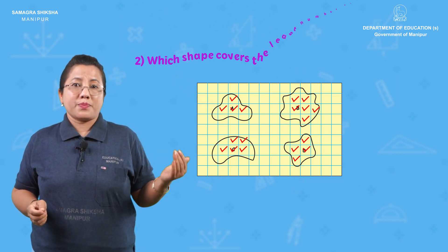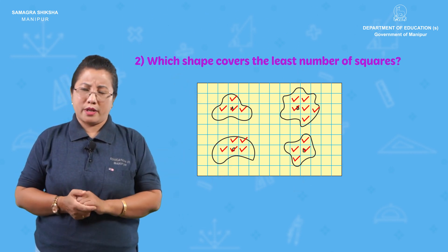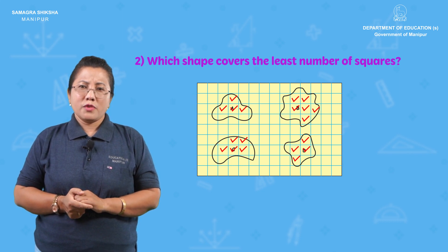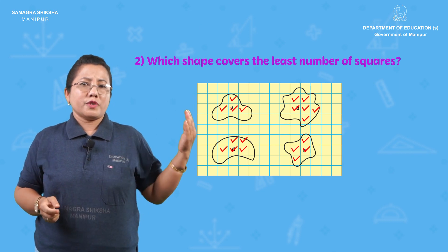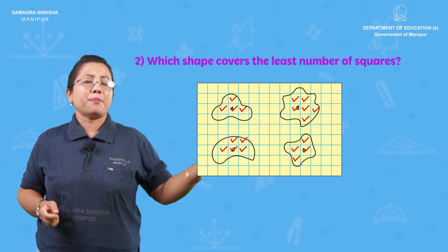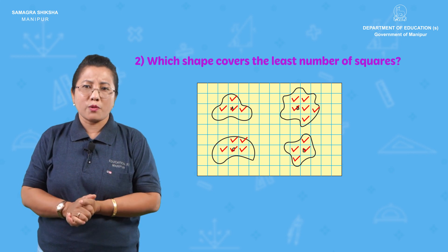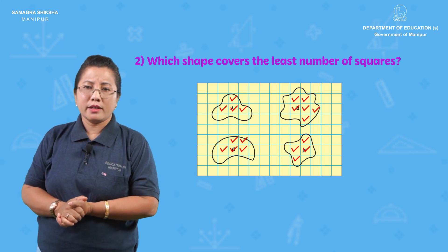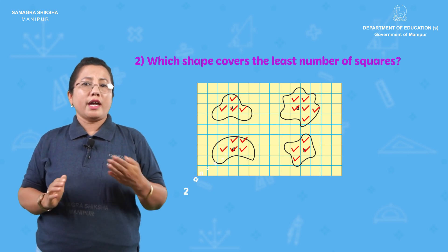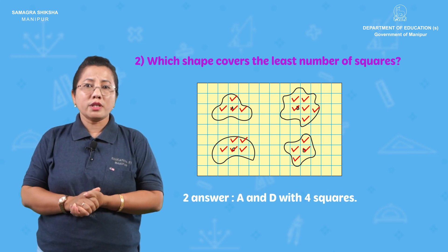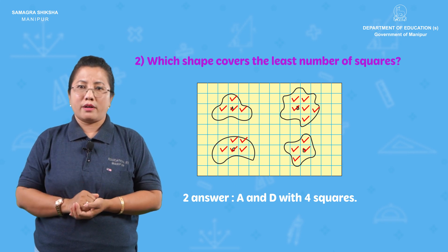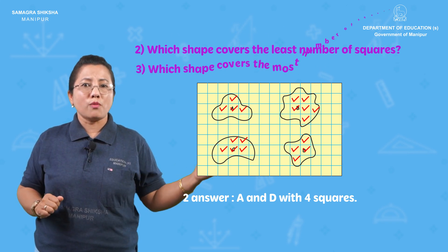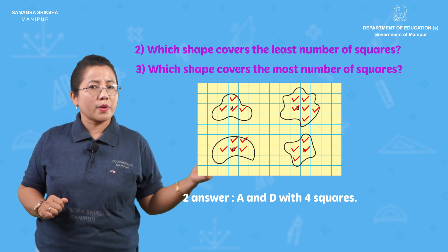Which shapes cover the least number of squares? Shapes A and D, with four squares each. And which shapes cover the most number of squares?